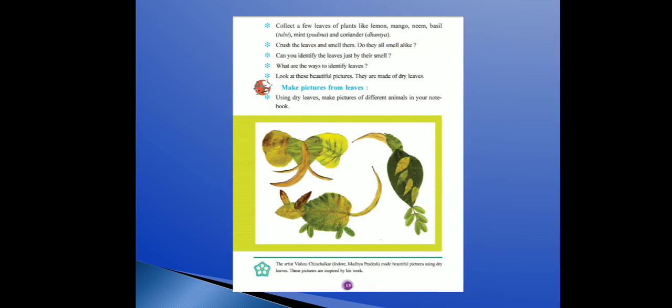Next, here an activity is given. Collect a few leaves of plants like lemon, mango, neem, basil — basil means tulsi, mint means pudina, and coriander — coriander means dhania. Jo sabzi mein daala jaata hai use English mein coriander bolte hain. Vo sab ke leaves ikatthe karne hain.